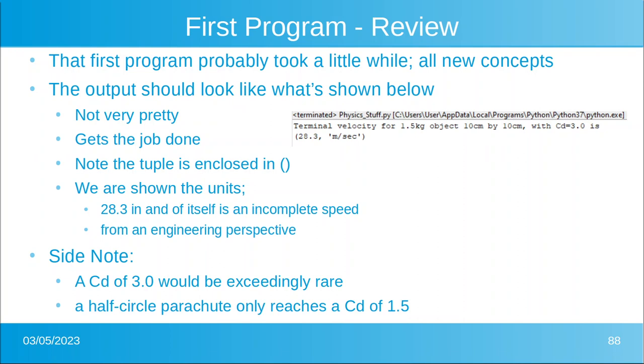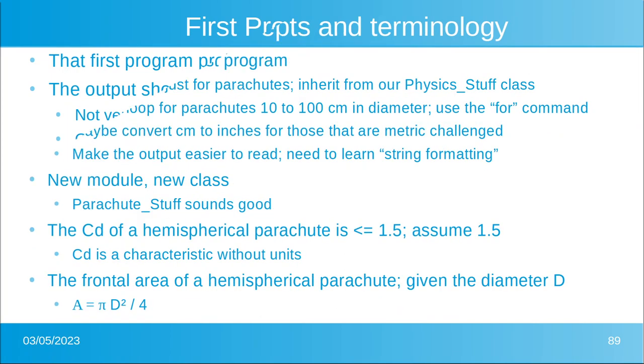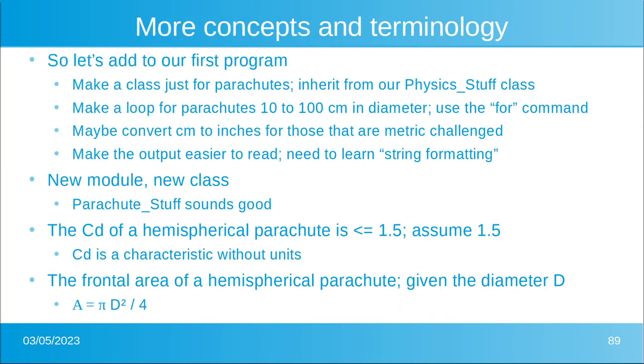A half-circle parachute is only 1.5. Okay, moving along, more concepts and terminology. Let's add to our first program. Let's make a class just for parachutes which is going to inherit from our Physics_Stuff class. Let's make a loop for parachutes from 10 to 100 centimeters in diameter. This is going to force you to use the for command. Let's convert from centimeters to inches for those that don't understand centimeters, and let's make the output easier to read, so we're going to learn something called string formatting.